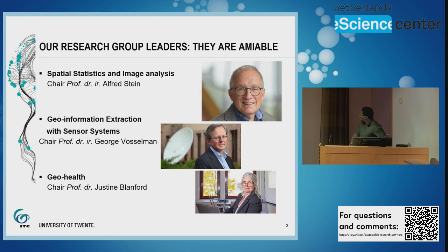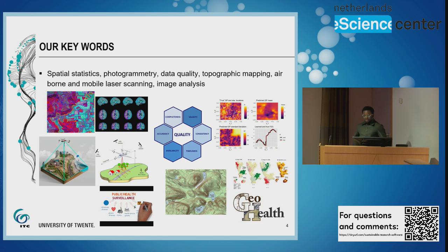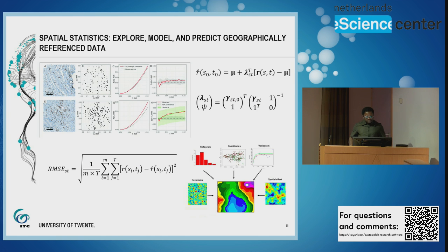We have three very able and amiable professors running the department. Our key areas include spatial statistics, photogrammetry, data quality, topographic mapping, airborne and mobile laser scanning, and image analysis — these are what I found on our website. I've done my best to add some aspects of geo health to it, because it needs to be there, so we may need to update our website in the near future.